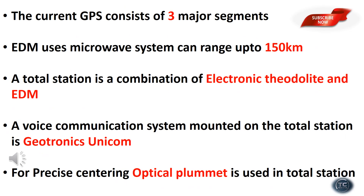The current GPS consists of three major segments. The EDM microwave system can range up to 150 km. The total station is a combination of an electronic theodolite and EDM — an electronic distance measurement unit.